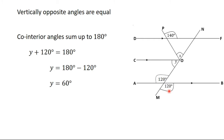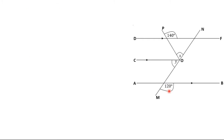Now let's move on to find X. To find X, I want to use the property of angles on a straight line. I'm going to introduce another variable here called V, assuming that this angle here is V. If I'm able to find the value of V, and I already know Y, I'll be able to find X.